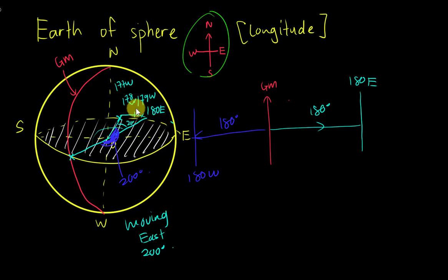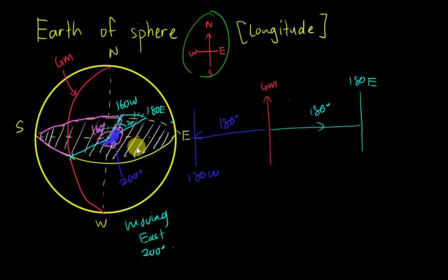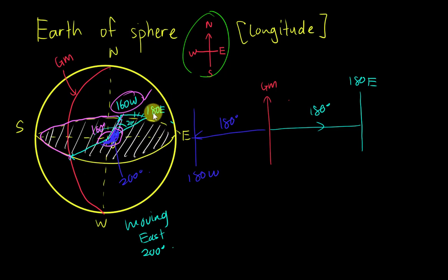So after moving 20 degrees past 180°, I get 160° West. Here's why: if I'm moving from the west side, the total angle on that side is 160°, because 200° plus 160° equals 360°. So moving 160 degrees from the Greenwich Meridian toward the west gives 160° West. The rule is: when you move more than 180°, subtract — 180 minus the extra degrees — and change the direction symbol. Or equivalently, work from the other side with the smaller angle.